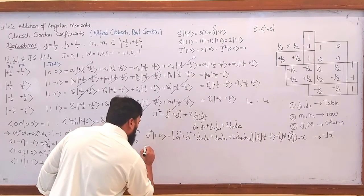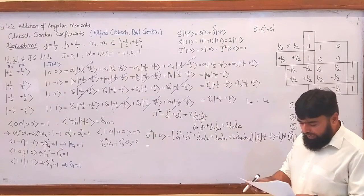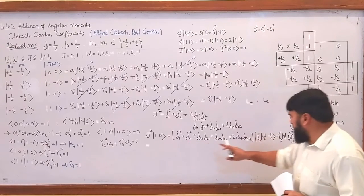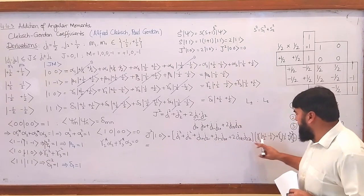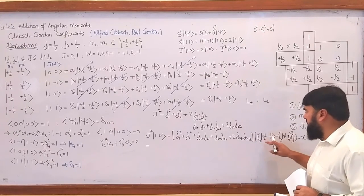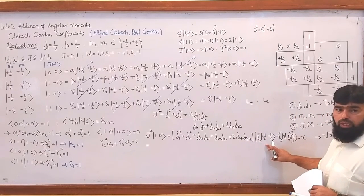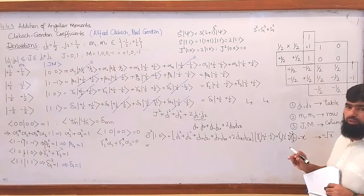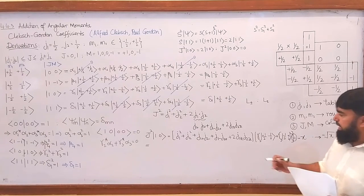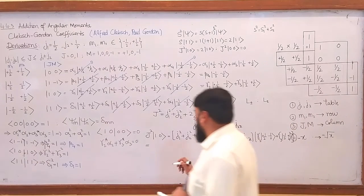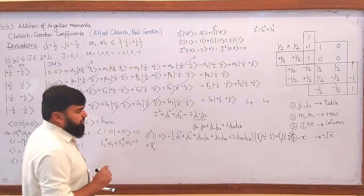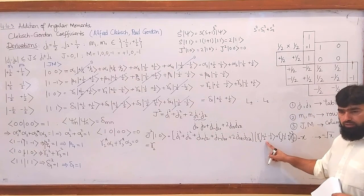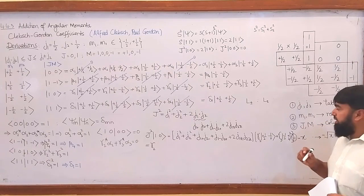Applying each term in order: first apply Ĵ₁² on the γ₂ term — γ₂ is the coefficient. When Ĵ₁² applies on a state, the eigenvalue comes out. Then apply Ĵ₂² on γ₂, then Ĵ₁₊Ĵ₂₋, then Ĵ₁₋Ĵ₂₊, and finally the 2Ĵ₁zĴ₂z term. Then repeat the same for the γ₃ term.